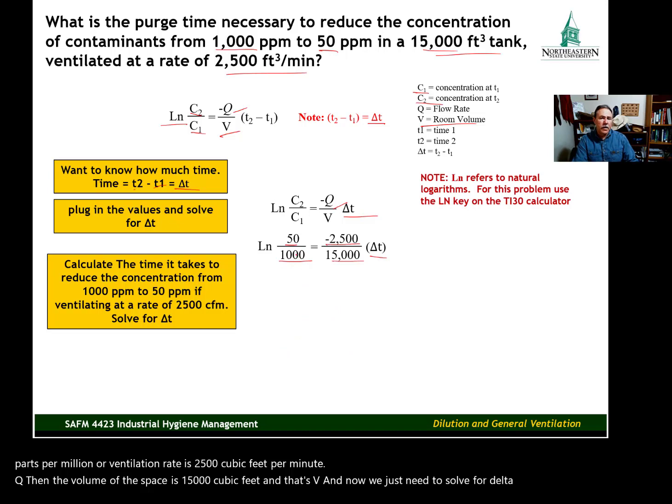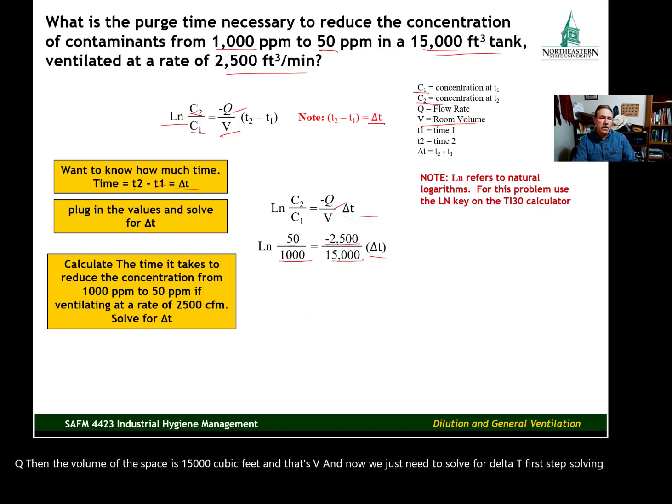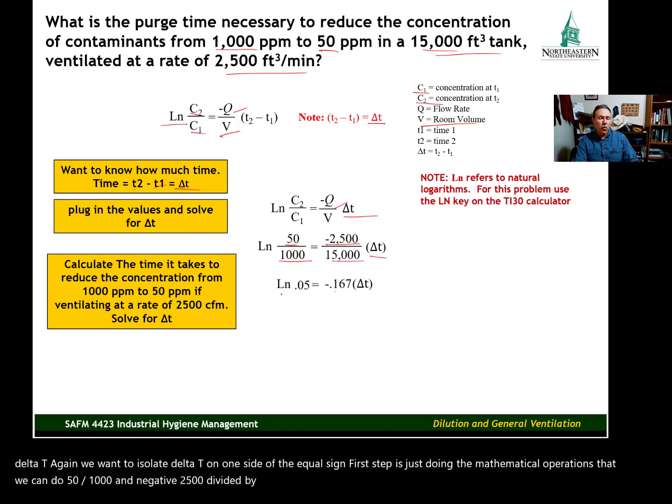First step, solving for delta T. Again, we want to isolate delta T on one side of the equal sign. First step is just doing the mathematical operations that we can do. 50 divided by 1,000 and negative 2,500 divided by 15,000. We end up with the natural logarithm of 0.05 equals negative 0.167 times delta T.